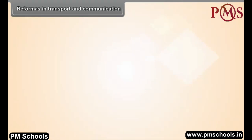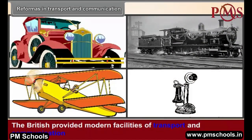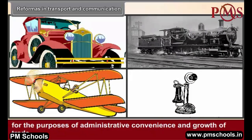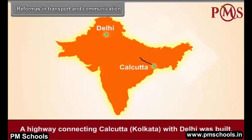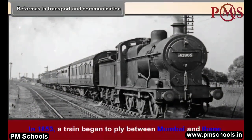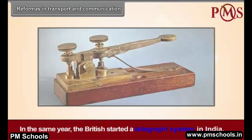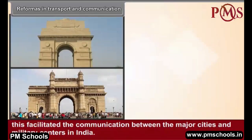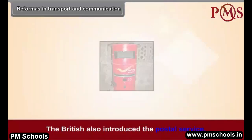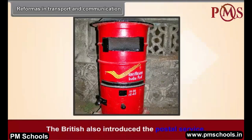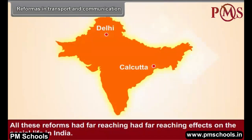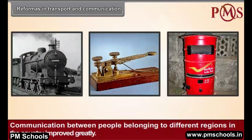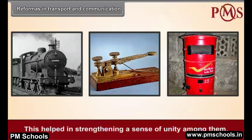The British provided modern facilities of transport and communication for administrative convenience and growth of trade. A highway connecting Calcutta with Delhi was built. In 1853, a train began to ply between Mumbai and Thane. In the same year, the British started a telegraph system in India, facilitating communication between major cities and military centers. The British also introduced the postal service. These reforms improved communication between people of different regions and helped strengthen a sense of unity among them.